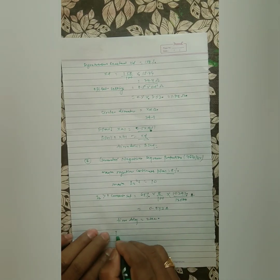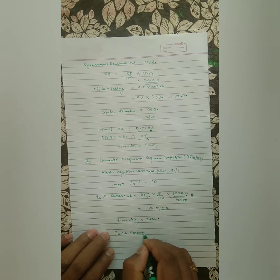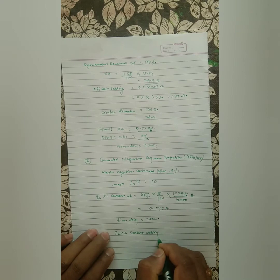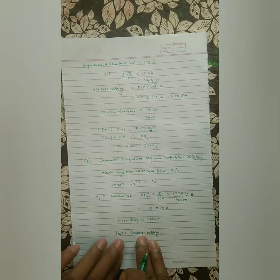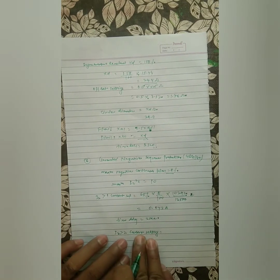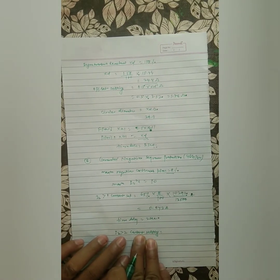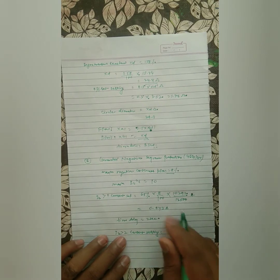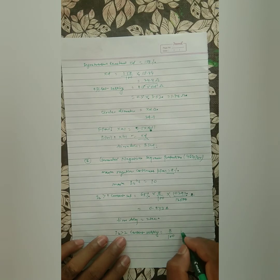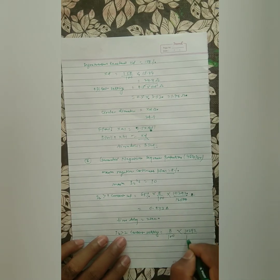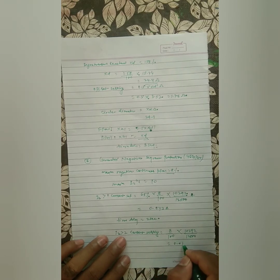For I2>2 current setting (second stage), we use the full 8%: 8/100 × (10292/12500 × 5) = 0.066 A.